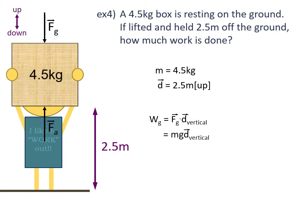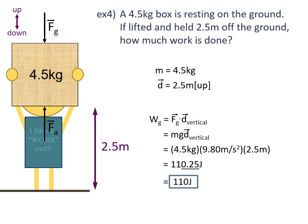Work against gravity equals F_g multiplied by the displacement vertically. F_g equals mass times gravity, so we substitute mg for F_g. We know the mass, gravity, and the vertical displacement. So: 4.5 kilograms × 9.80 metres per second squared × 2.5 metres gives us 110.25 joules. Rounding to two significant figures, our answer for Example 4 is 110 joules.